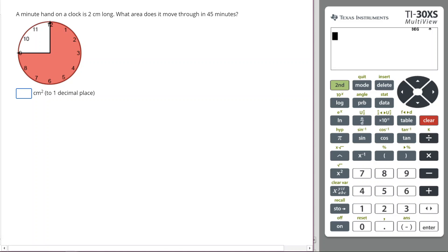Welcome! In this video we'll be answering this question: A minute hand on a clock is two centimeters long. What area does it move through in the first 45 minutes? This is a very nice question because it's actually drawn for us - the shaded area that we're after. This is the first 45 minutes.